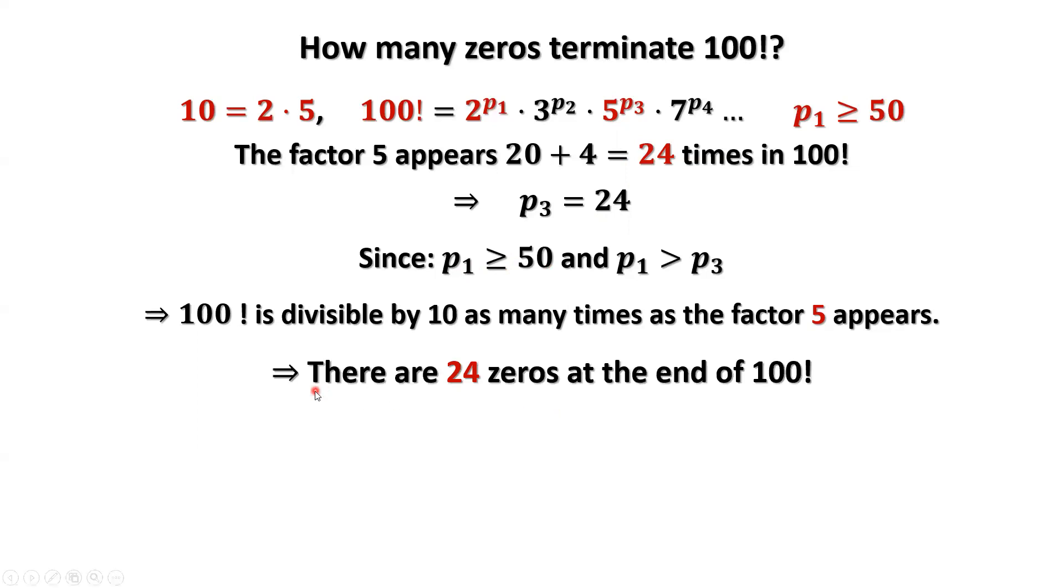Therefore, there are 24 zeros at the end of 100 factorial.